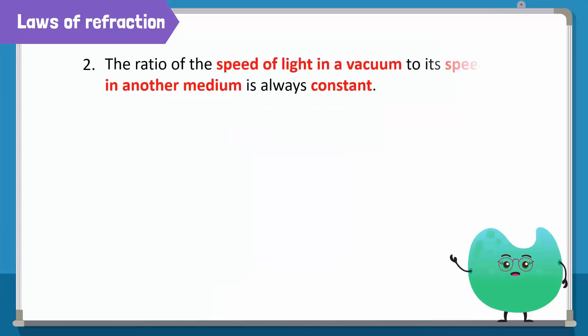Two, the ratio of the speed of light in a vacuum to its speed in another medium is always constant. This ratio is known as the refractive index of the material.